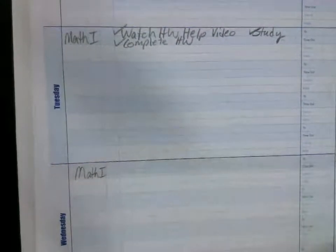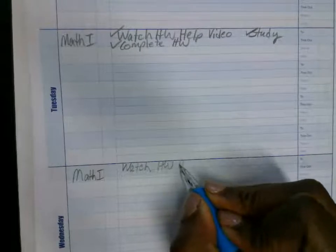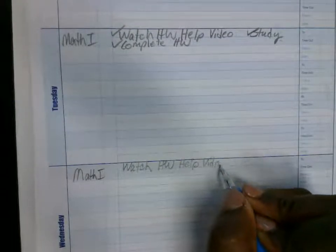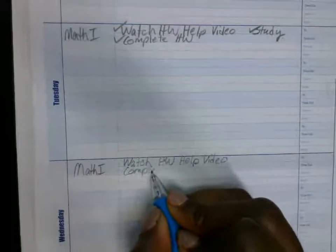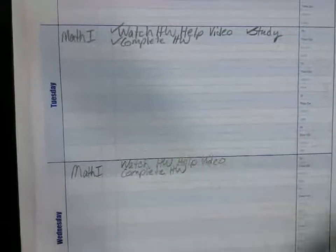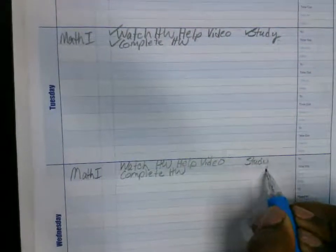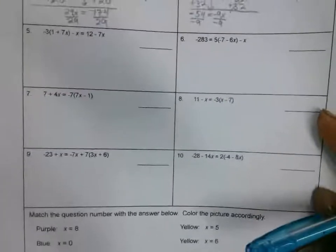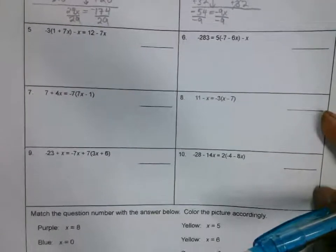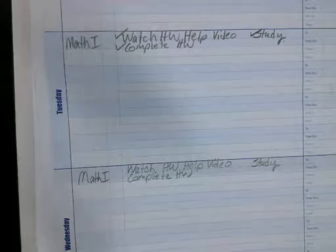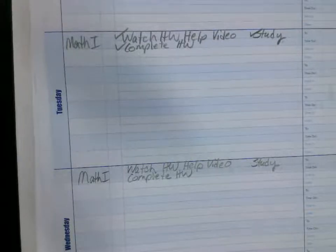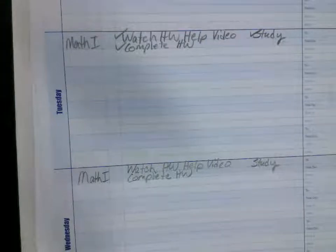Tonight is Wednesday, math one. Tonight you need to make sure that you watch the video — it's optional if you need help. Make sure you complete the homework. If you need to add homework from last night because you didn't complete it, add that so you can check it off. And we need to be studying — work on these problems to see if you can get the answers. Make sure you also review your notes on expressions, equations, combining like terms, distributive property, and solving equations. Review those things.